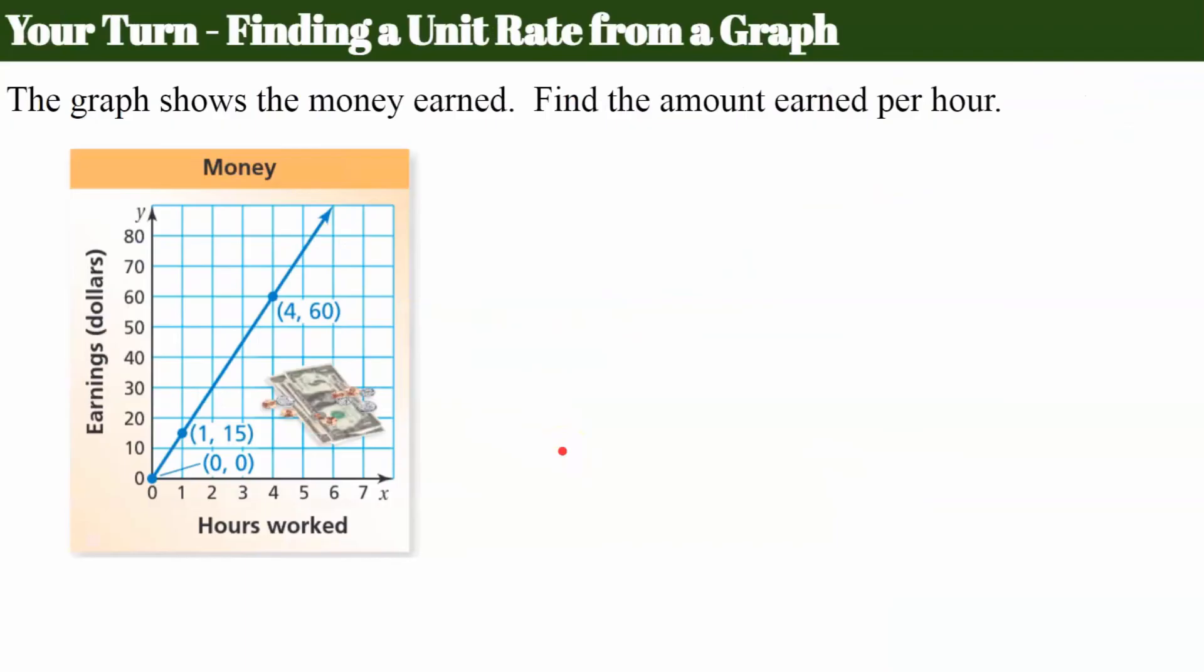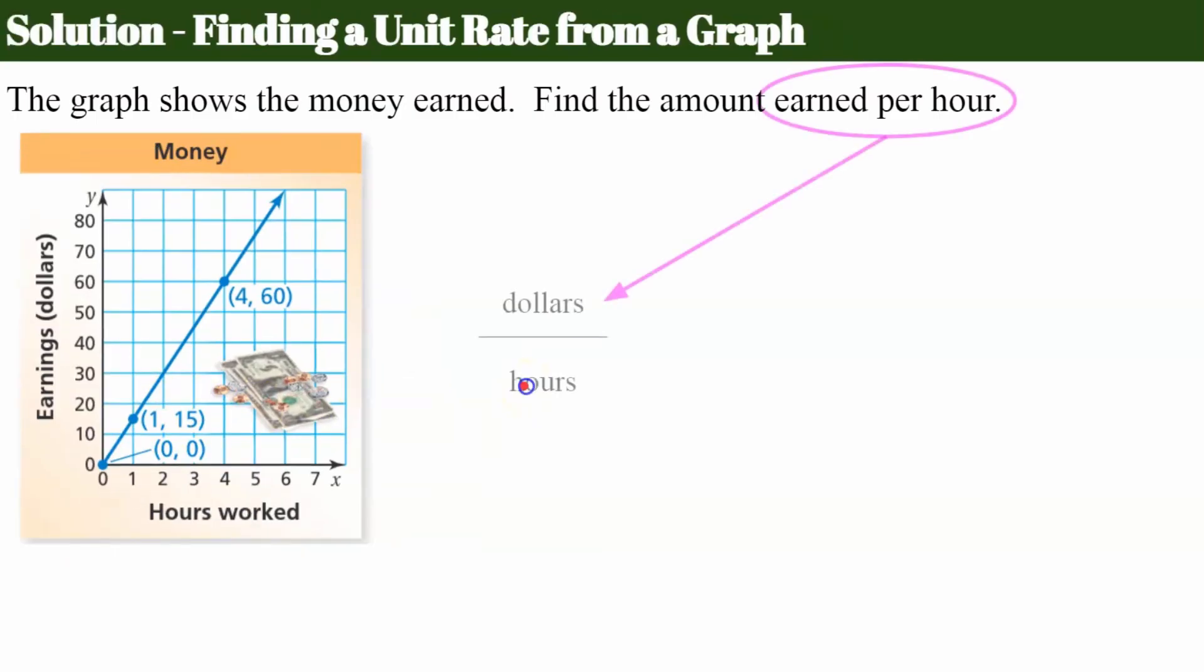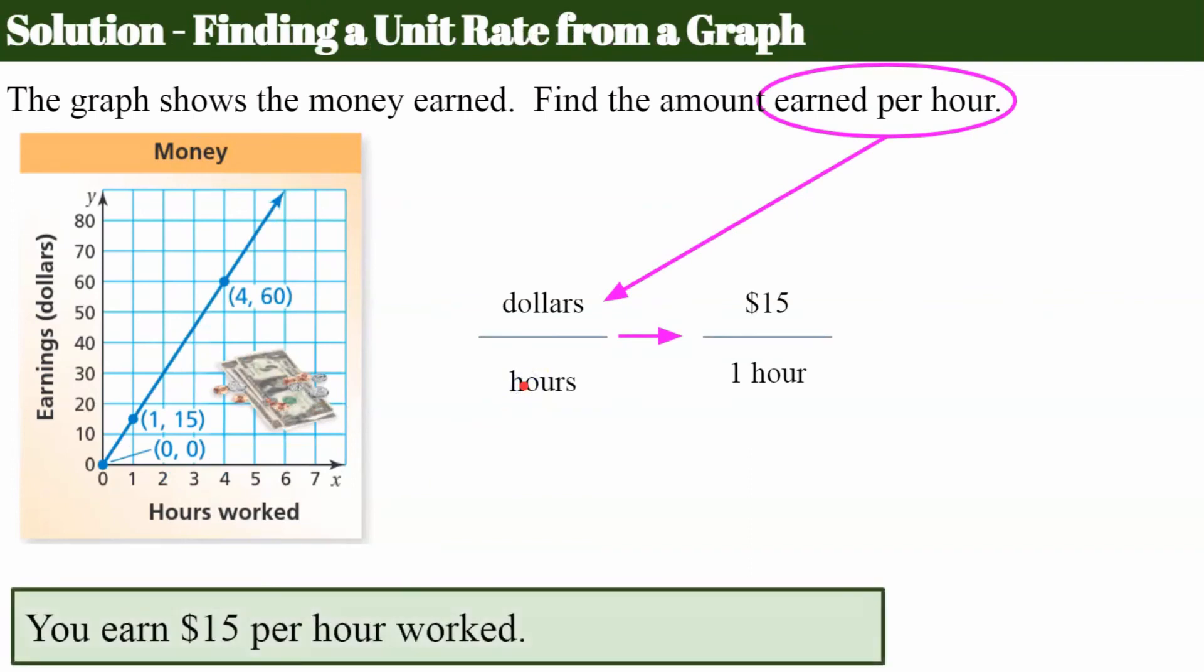Okay, try this one please. Pause, come back and hit play when you're ready to check your work. Welcome back. Hopefully you didn't do too much math because here we are given one hour of work is $15. That's your unit rate. So we know that because we want dollars per hour and we got $15 per hour. So you can conclude that you earned $15 per hour worked.